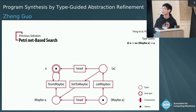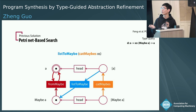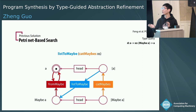Let me show you how to find the path. First, we fire the transition catMaybes, moving the token from list maybe A to list of A. Next, we fire the transition list2maybe, consuming the token in list of A and producing one in maybe A. Then we consume the tokens in A and maybe A by firing the transition fromMaybe and produce one back into A. Now there is only one token in the return type of the query and we find the path, giving us our desired solution.